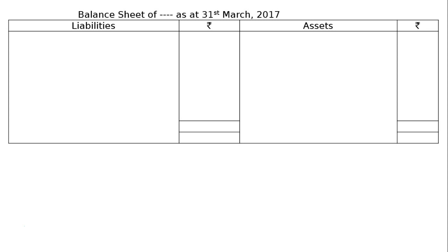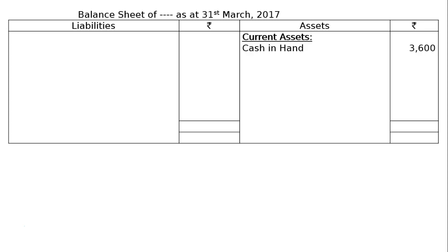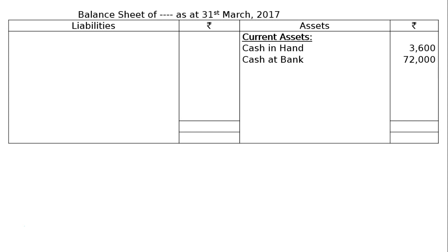Start from the asset side. Under current assets: cash in hand is rupees 3,600; cash at bank is rupees 72,000; sundry debtors is rupees 64,000; and closing stock is rupees 1,48,000.